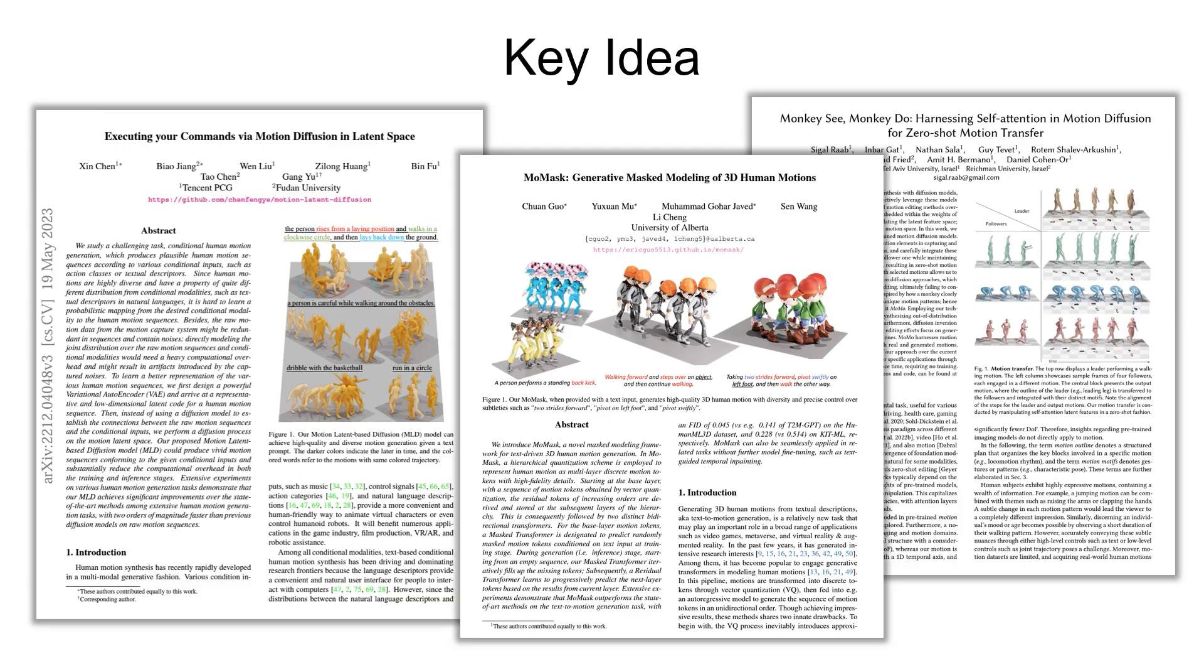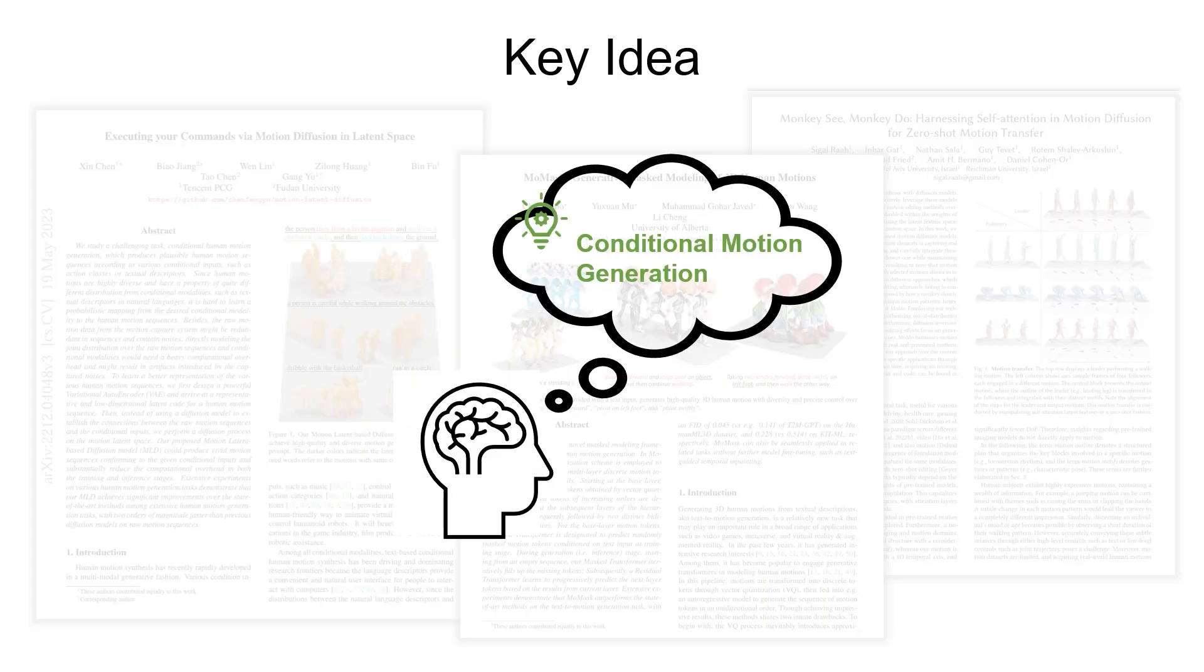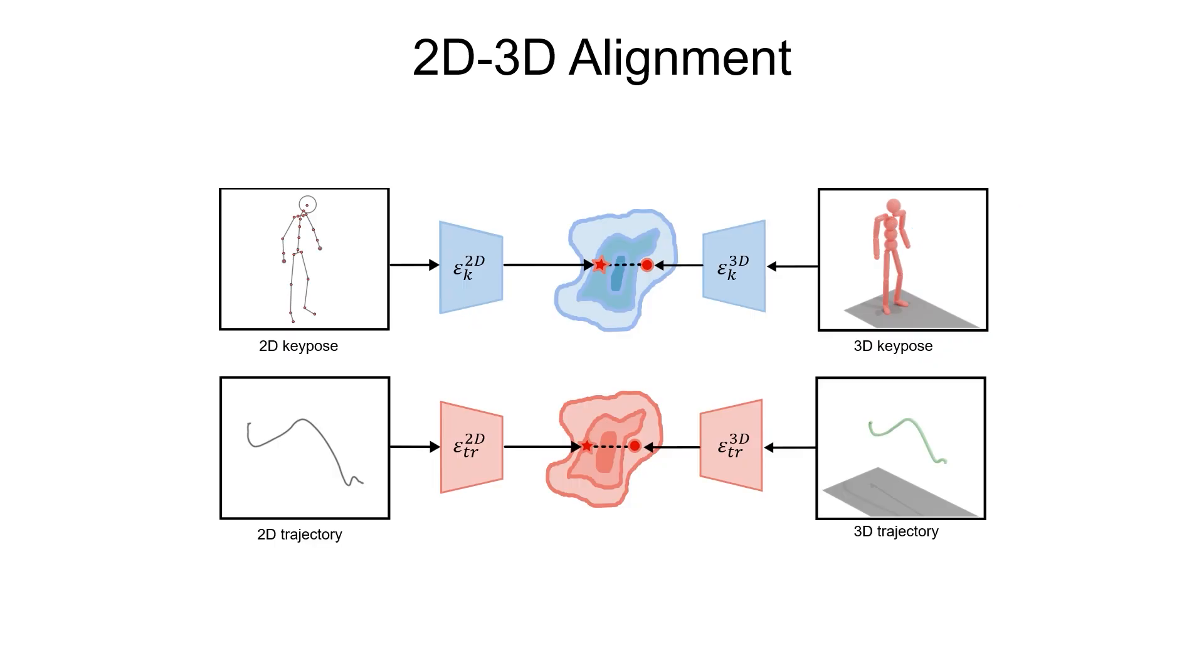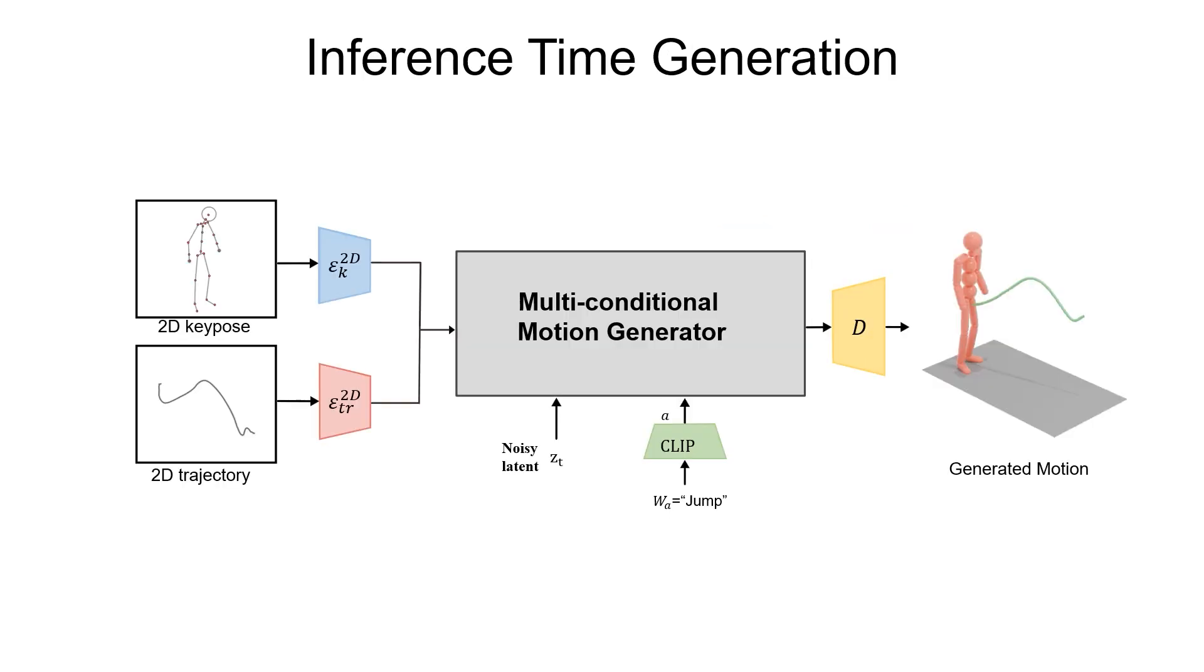Technically, inspired by the significant advancements of motion generation, we propose to solve this problem from the perspective of conditional motion generation. Our framework consists of two core modules. The first module is a multi-conditional motion generator built upon a motion diffusion model. It consumes 3D key poses and trajectories as conditions for motion synthesis, since they contain more precise motion cues. The second module builds shared embedding spaces to align the 2D and 3D key poses and trajectories. Thanks to the shared embedding spaces, at inference time, we can directly input 2D key poses and trajectories to obtain the corresponding 3D motions.